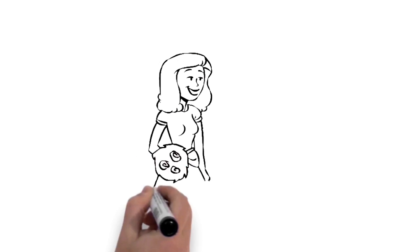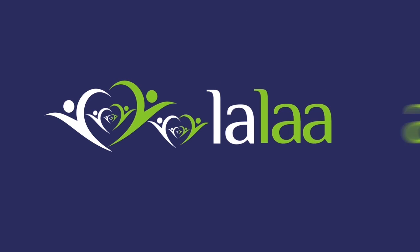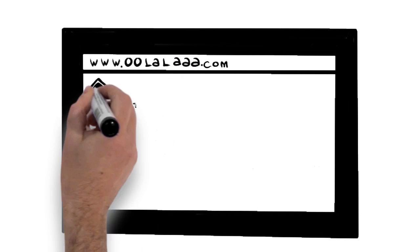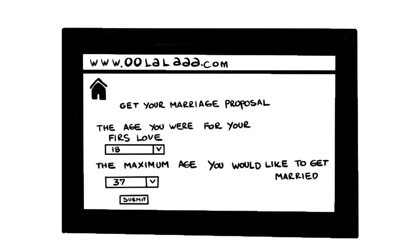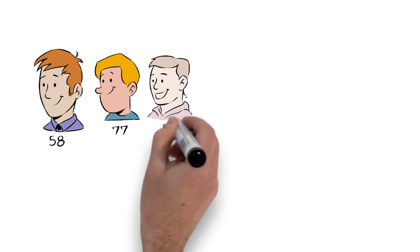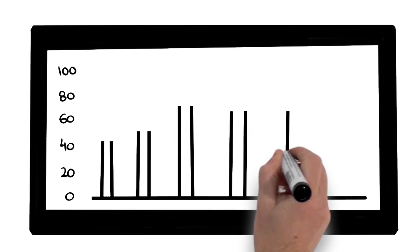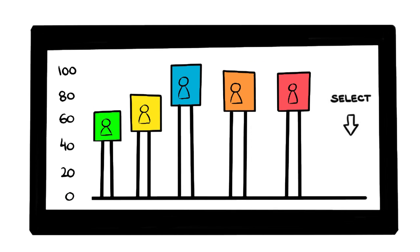You don't need to know the math behind this optimal life decision making. What you need to know is that Oolala is there to help you. Simply go to the Marriage tab, select the age you started dating, and the grades that you would like to give your previous lovers. If you happen to have had multiple lovers a year, then select the best at each age. And finally select the age you would like to get married in the worst case scenario.